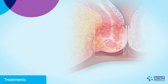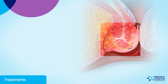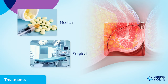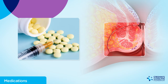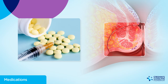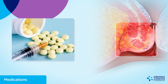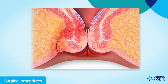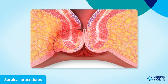Treatment for fistulas may involve a combination of medical and/or surgical procedures. Some Crohn's disease medications may also be effective in treating fistulas. Antibiotics and biologics work to reduce inflammation and promote healing. Surgical procedures aim to heal fistulas while preserving anal muscles.